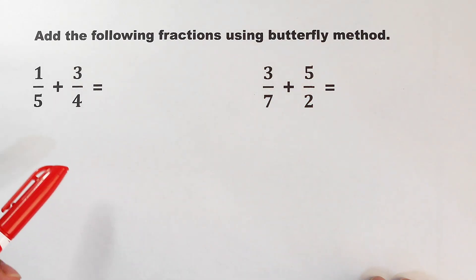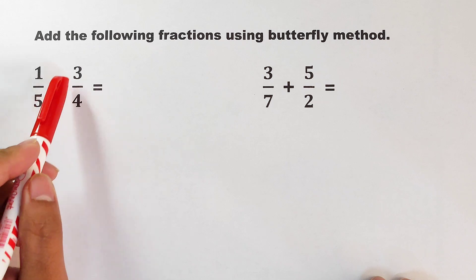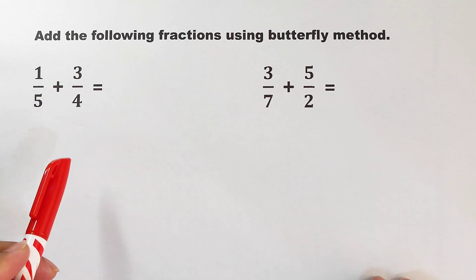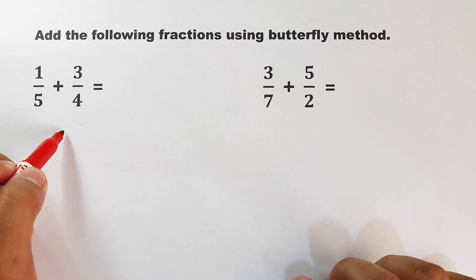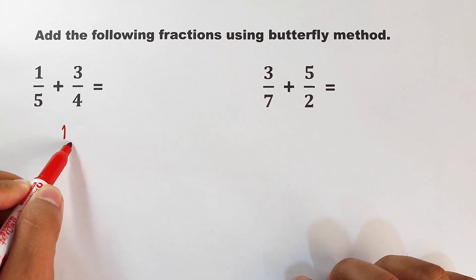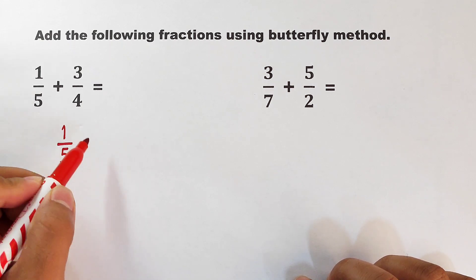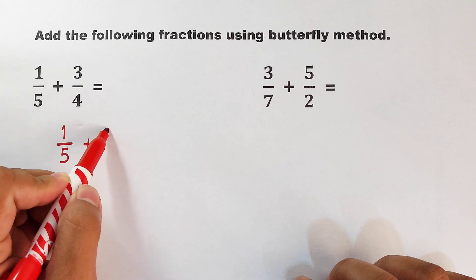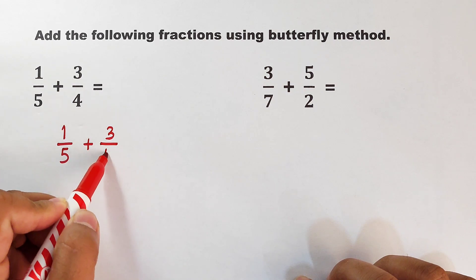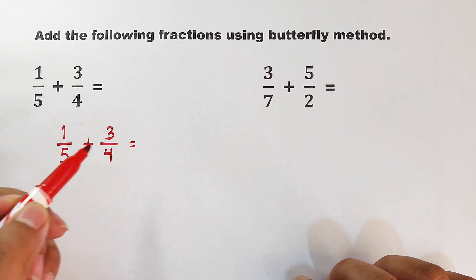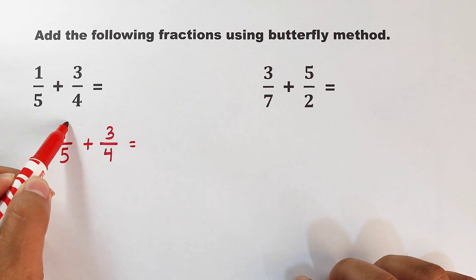Let's proceed with item number one: we have 1/5 + 3/4. How do we perform the butterfly method? First, let me write the two fractions: 1/5 + 3/4. Now the first thing you need to do is to multiply